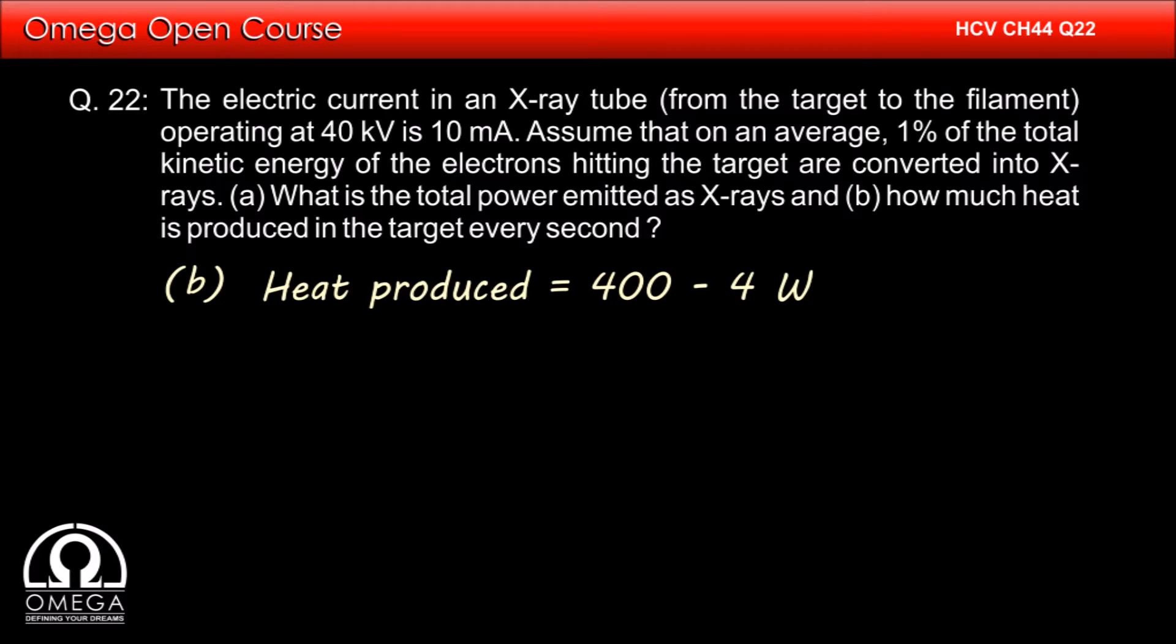400 W of power was delivered through current, of which 4 W was emitted in X-rays. The rest of the energy must be dissipated as heat. Therefore, the heat produced equals 400 - 4 W, which is 396 W. This is our answer.